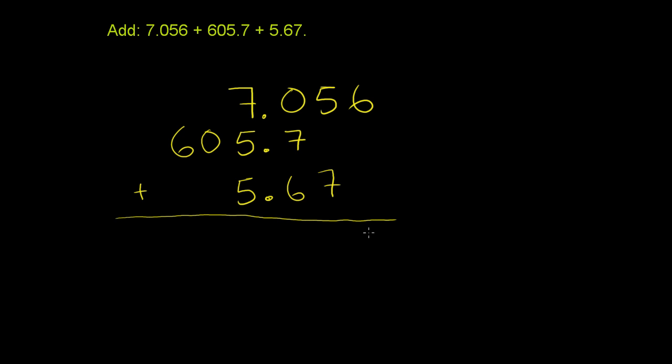You could just bring this 6 down. Or you could view this 605.7 as the same thing as 605.700. You can add as many zeros to the right of this decimal, to the right of the 7 as you want, since we're sitting on the right side of the decimal without changing its value.